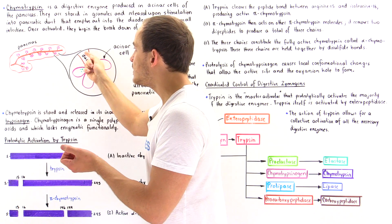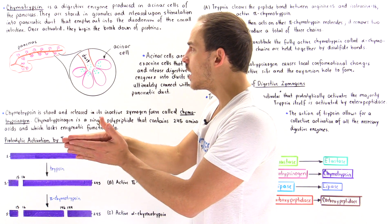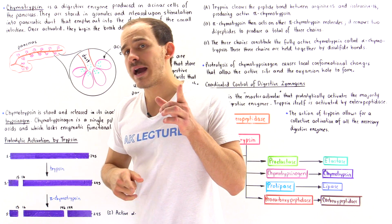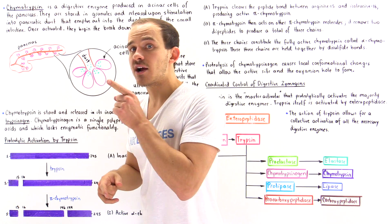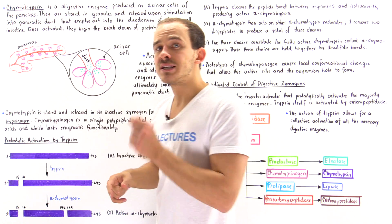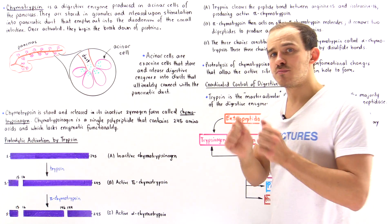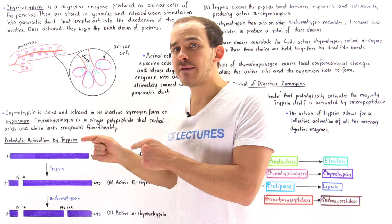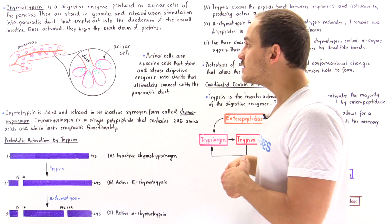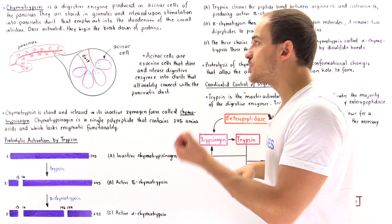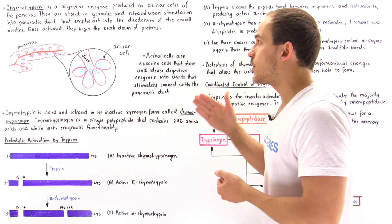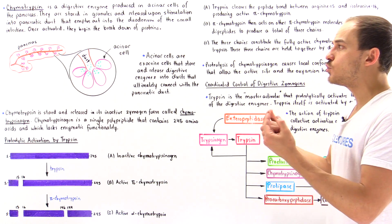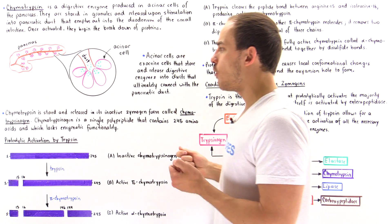The duct empties into a larger duct, which eventually empties into the pancreatic duct. The pancreatic duct connects directly to the initial portion of the small intestine, called the duodenum. Once the zymogens are inside the intestine, they only begin to cleave proteins after being activated into their fully functional form.